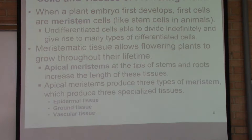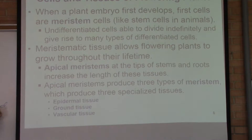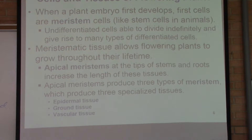Meristematic cells are just like stem cells in animals. They are undifferentiated cells, meaning they are not specialized. But these cells produce specialized cells from them. Like stem cells in animals, meristematic cells not only make other types of cells, but they also renew themselves. In humans, stem cells make blood cells or muscle cells, but they also keep producing more of themselves.